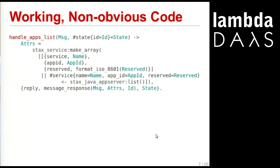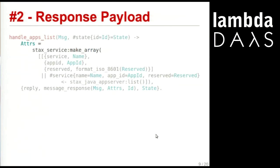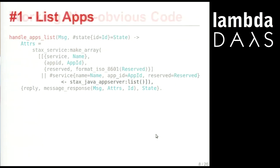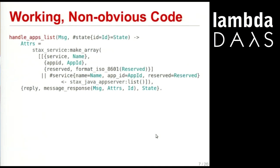There are really three things going on. It's important to understand what your code does and also the context of it, especially when you're looking at it for the first time. This is an actual AMQP message handler. A request is being made from outside — a bunch of servers are running and we want to know what applications are running on a given server. We send a message saying 'list the apps for me,' and this is the handler for that message.